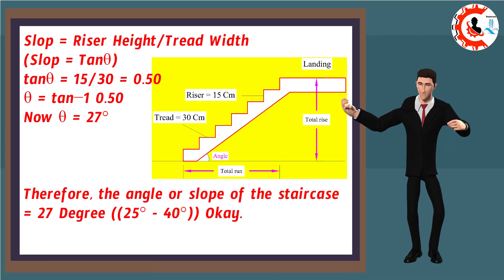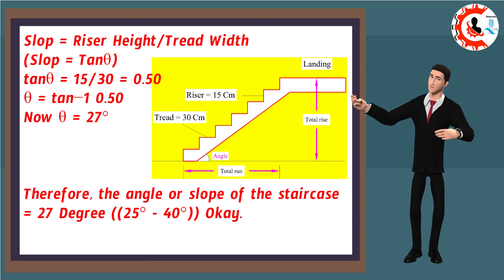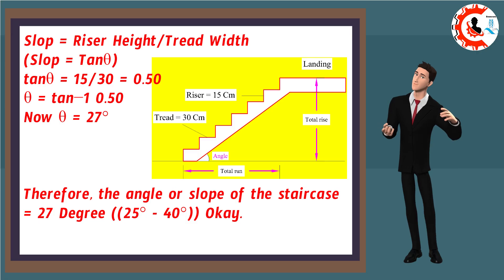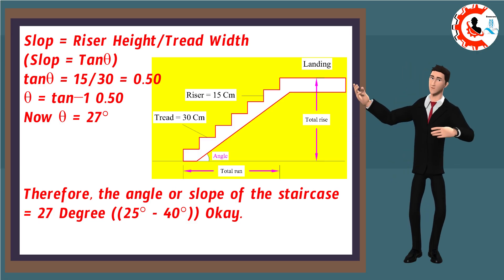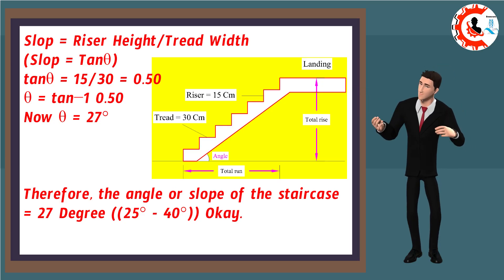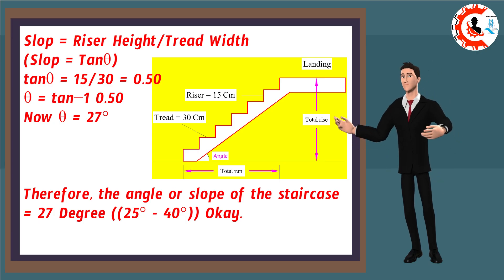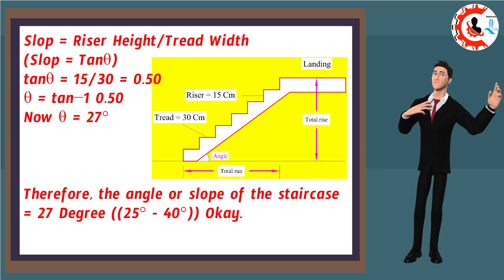Slope equals riser height divided by tread width. Slope equals tangent theta. Tangent theta equals 15 divided by 30 equals 0.50. Theta equals inverse tangent of 0.5. Now theta equals 27 degrees. Therefore, the angle or slope of the staircase equals 27 degrees.